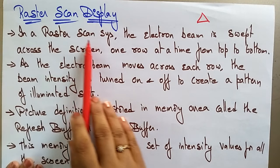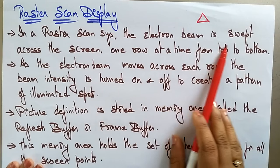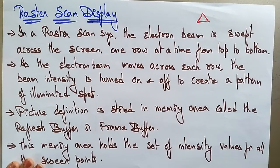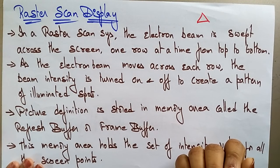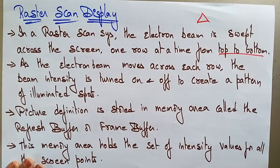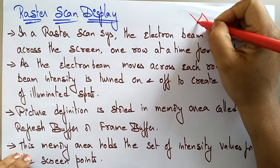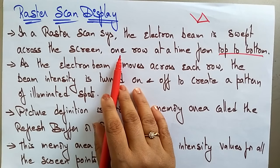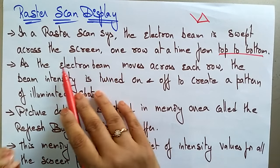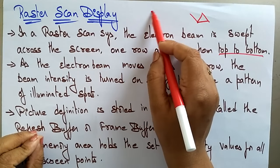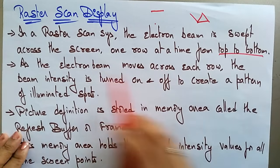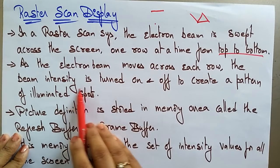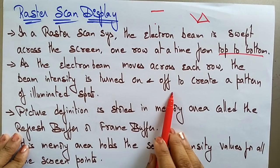In a raster scan system, the electron beam is swept across the screen one row at a time from top to bottom. In random scan, the electron beam is directed only to the portion where the image has to be displayed. But in raster scan, the electron beam starts at the top and ends at the bottom, moving across each row. As the electron beam moves across each row, the beam intensity is turned on and off to create a pattern of illuminated spots.